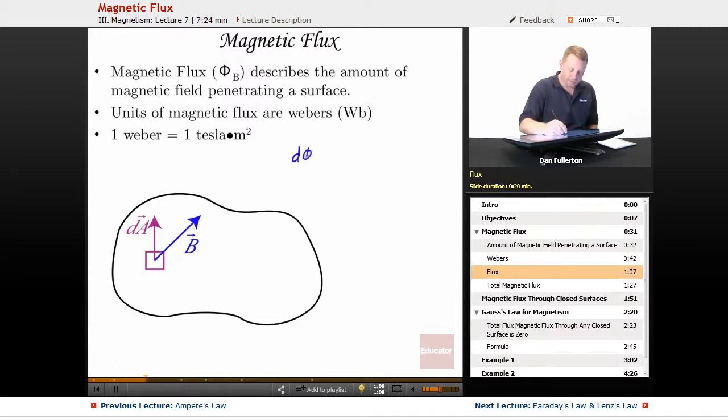So the little bit of flux that we have through that little bit of dA is going to be B dot dA, which is B dA cosine theta if we're looking for magnitudes, where theta is the angle between the normal and B.